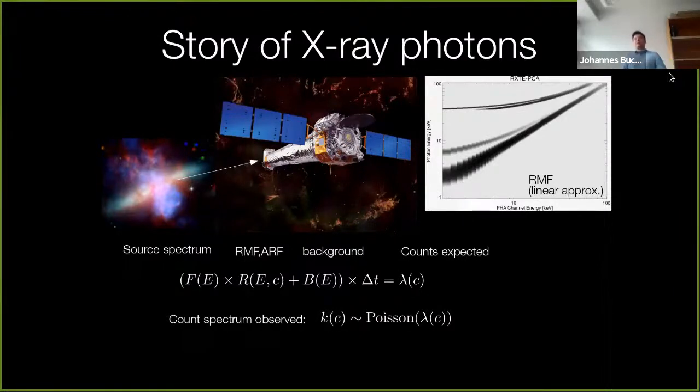I'll talk in particular about x-ray spectra from a point source, but many of these concepts can be transferred to other data like timing and imaging. On the left, you have your astrophysical source with its source spectrum. The x-ray photons enter the mirror modules of the telescope, are twice reflected and focused on the detector where they are transformed into an electron cloud and become counts in energy channels.